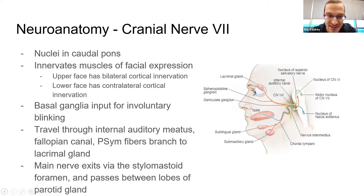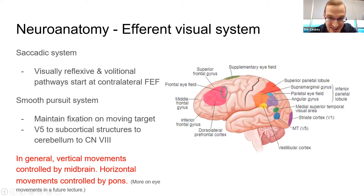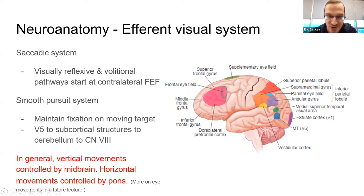Cranial nerve 7 we'll get into a little later. The efferent exam in neuro-ophthalmology is complicated because there's a lot of cortical input from many different areas, making it poorly localizing. In general, you can think of vertical movements being controlled by the midbrain and horizontal movements being controlled by the pons. That's not asked too frequently on OKAPS so we won't go into much detail.